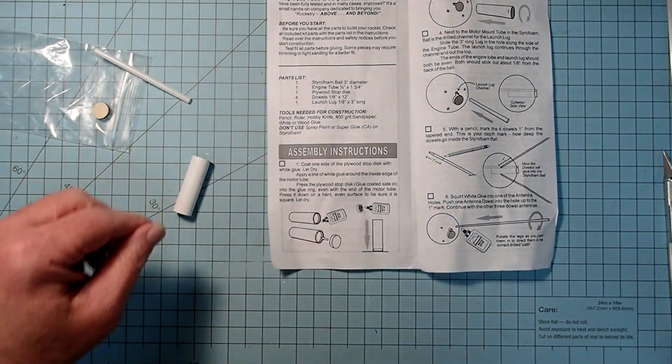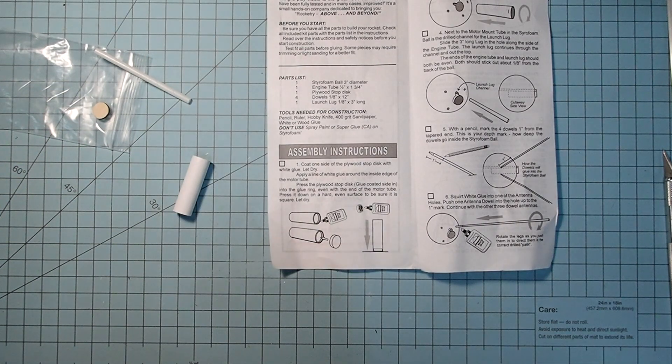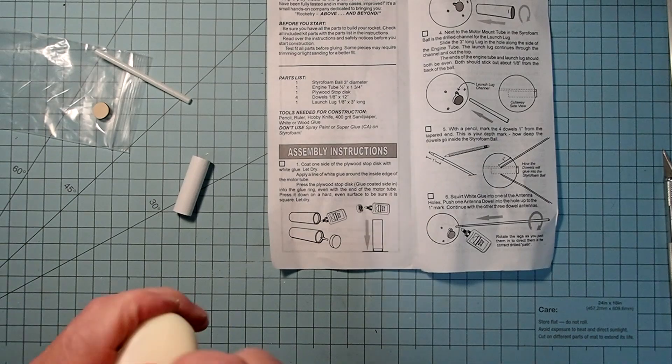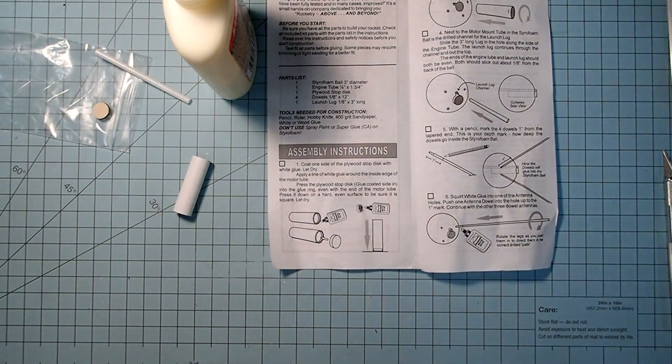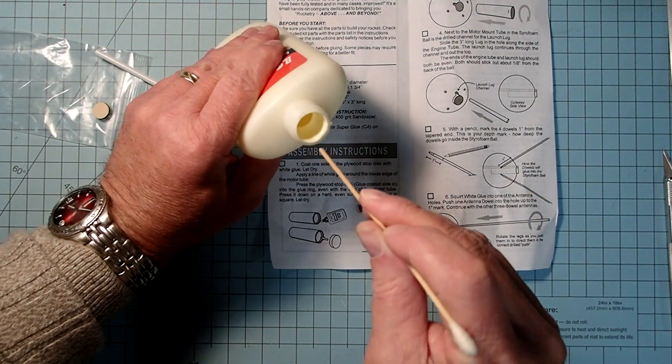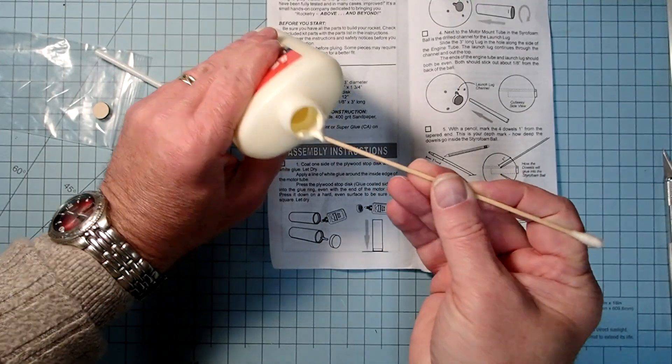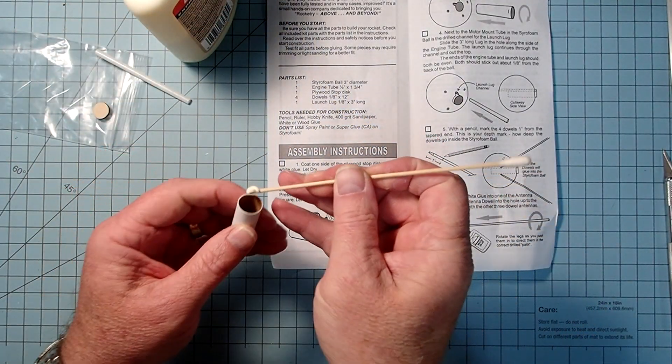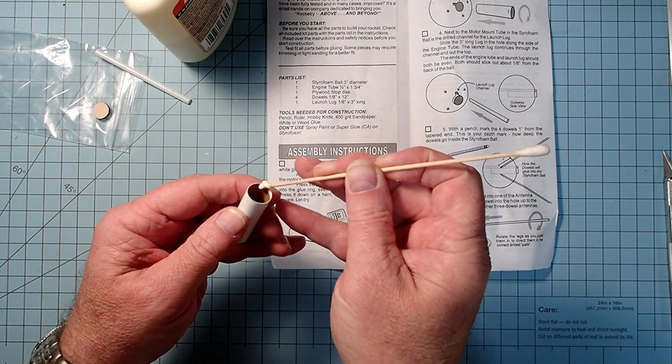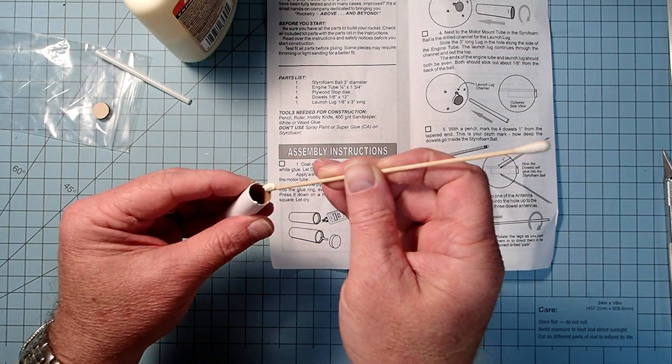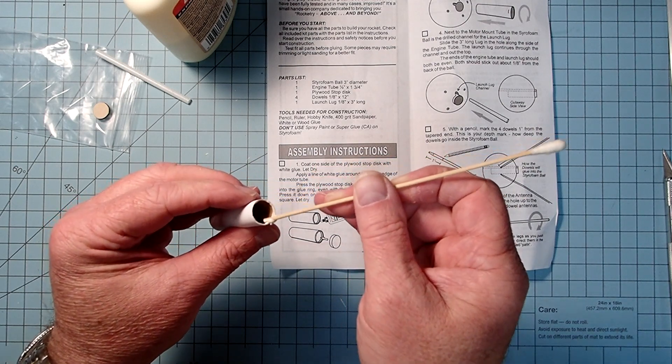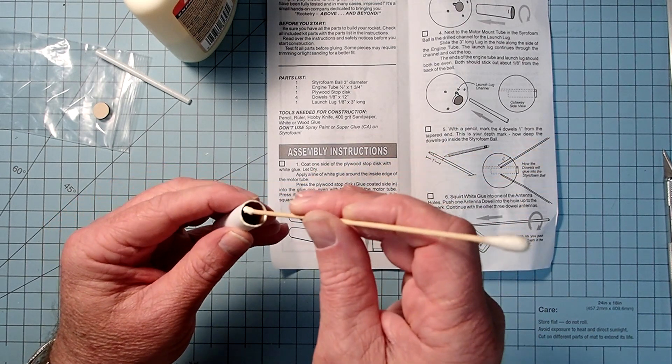So here we're going to put in a small amount of either white glue or wood glue. I'm going to use wood glue just because it dries faster and a little stronger. And we're going to want to have a little bit of control here. So I'm just going to use the stick end of an applicator so that I can get this just right inside the edge. So I don't want a bunch of glue going down inside where it may interfere with the motor itself.